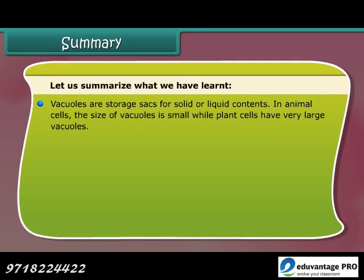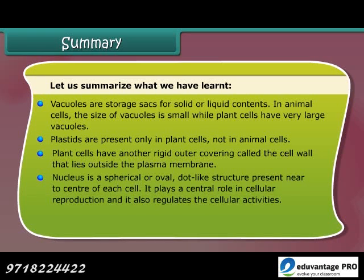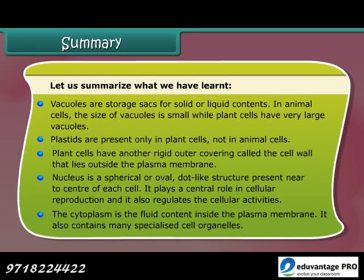Vacuoles are storage sacks for solid or liquid contents; animal cells have small vacuoles while plant cells have very large vacuoles. Plastids are present only in plant cells. Plant cells have a rigid outer covering called the cell wall, mainly composed of cellulose, which provides strength to the cell. The nucleus plays a central role in cellular reproduction and regulates cellular activities. The cytoplasm is the fluid content inside the plasma membrane and contains many specialized cell organelles.